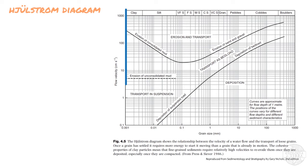Here the x-axis is the grain size in millimeters, and on the top part of the diagram we have the grain size name. The y-axis is the flow velocity in centimeters per second. Note that both axes are shown as a base-10 logarithmic scale.